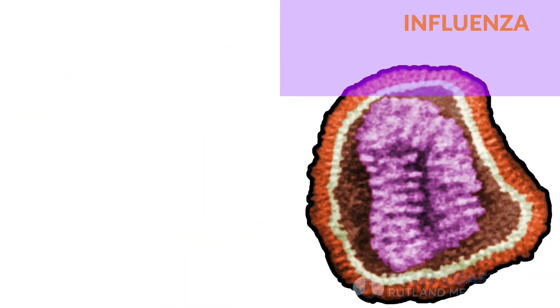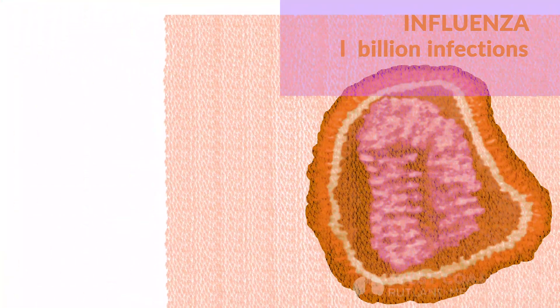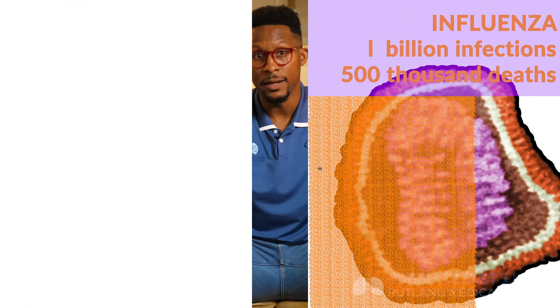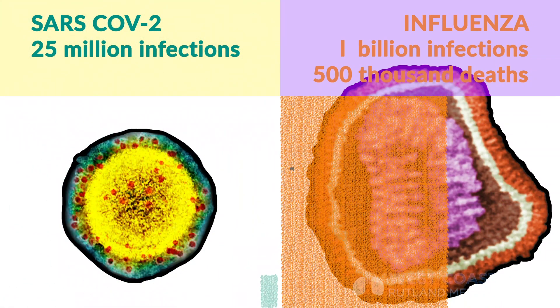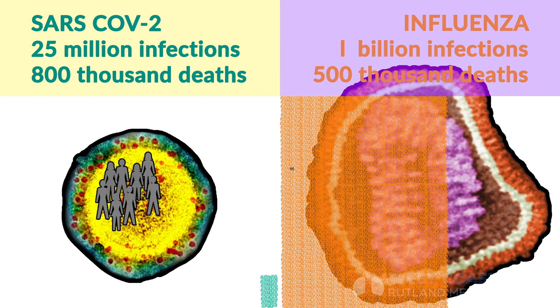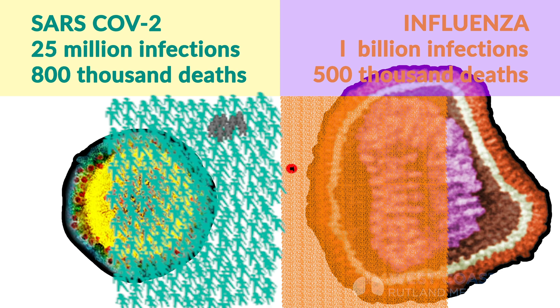Let's go over some basic stats. When you look at the number of infections worldwide of influenza, we're talking about a billion infections worldwide, with around 500,000 deaths annually. When we look at SARS-CoV-2 specifically, we have over 25 million infections with about 800,000 deaths worldwide. So right now we have fewer infections but a greater amount of death. These are just stats — not meant to scare you.